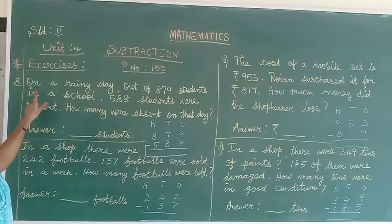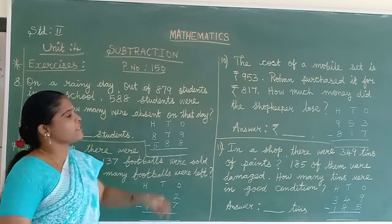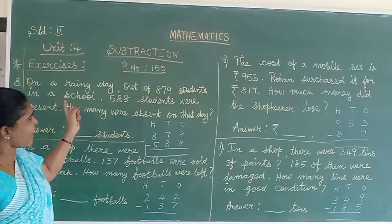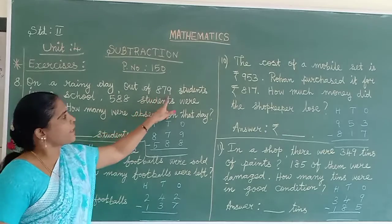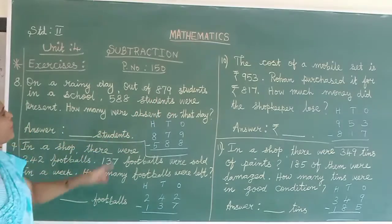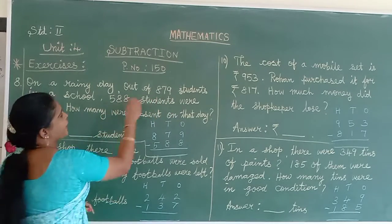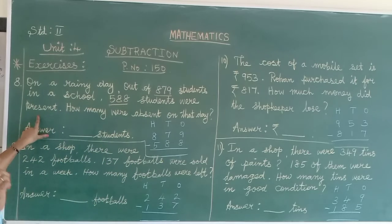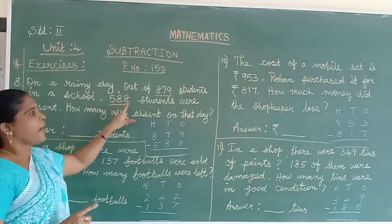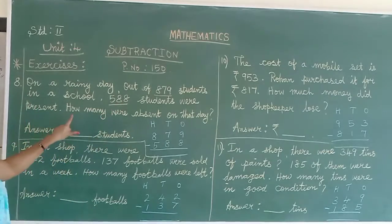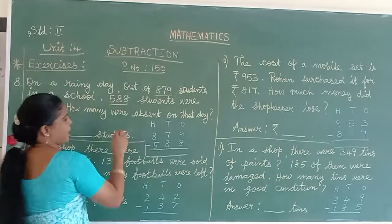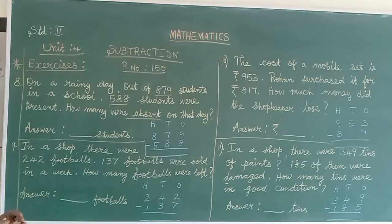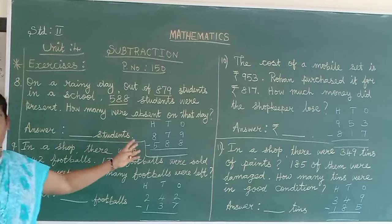On a rainy day, out of 879 students in a school, 588 students were present. How many were absent on that day? Ask about the left children, how many were absent on that day?